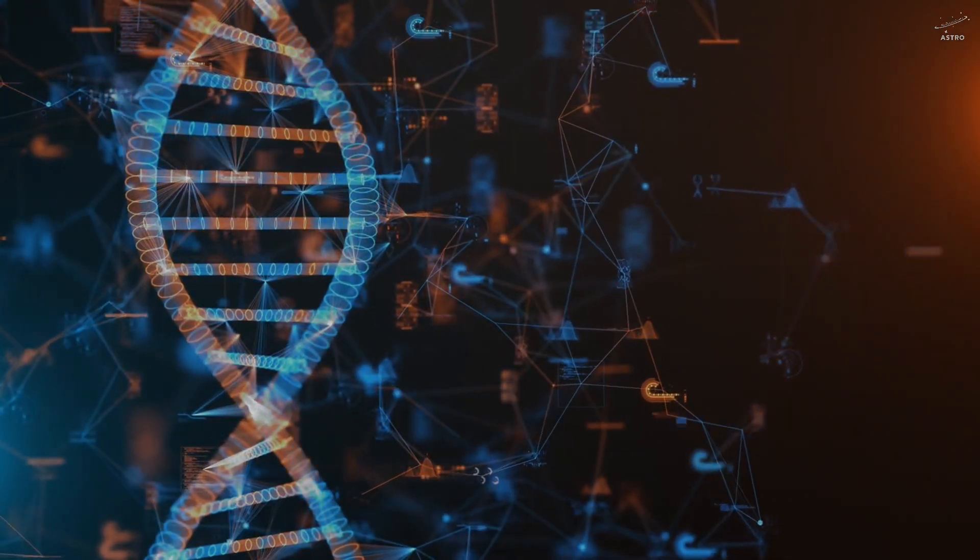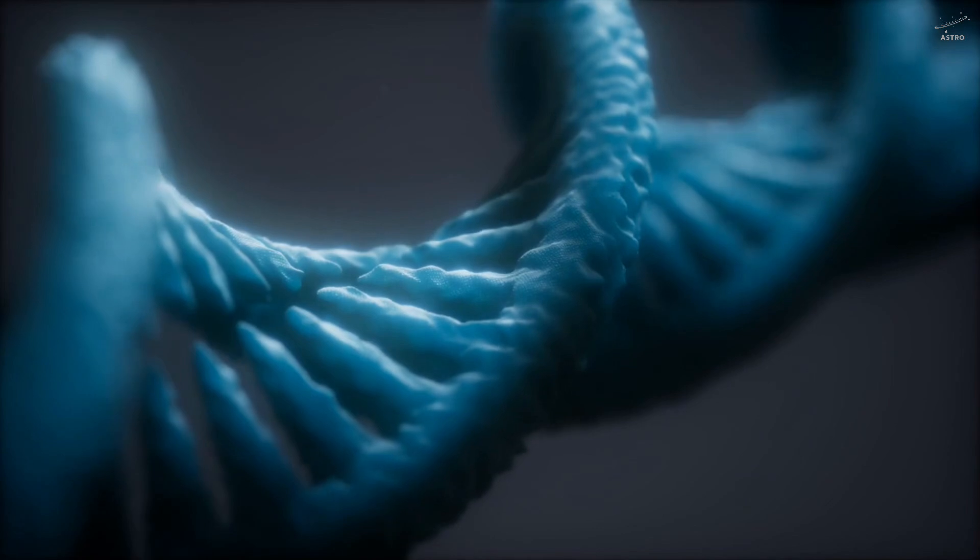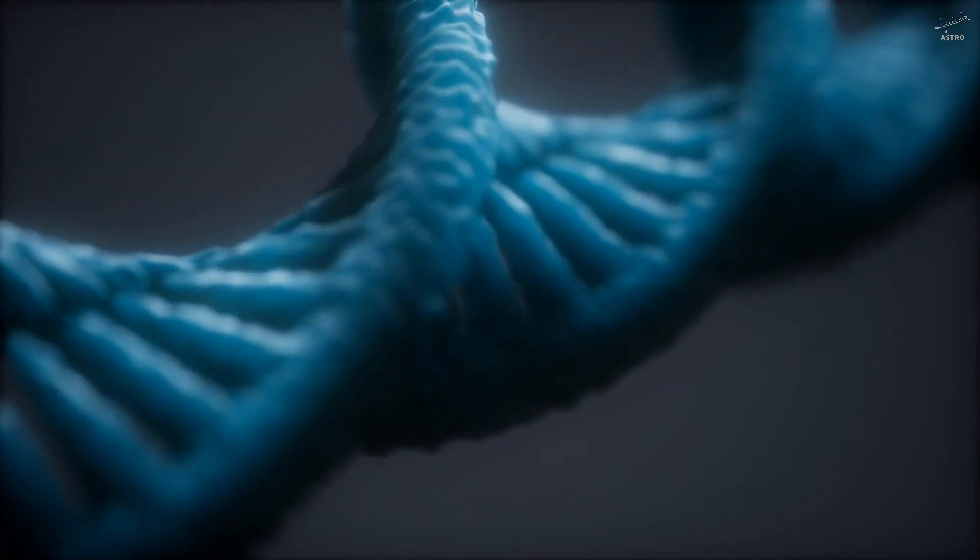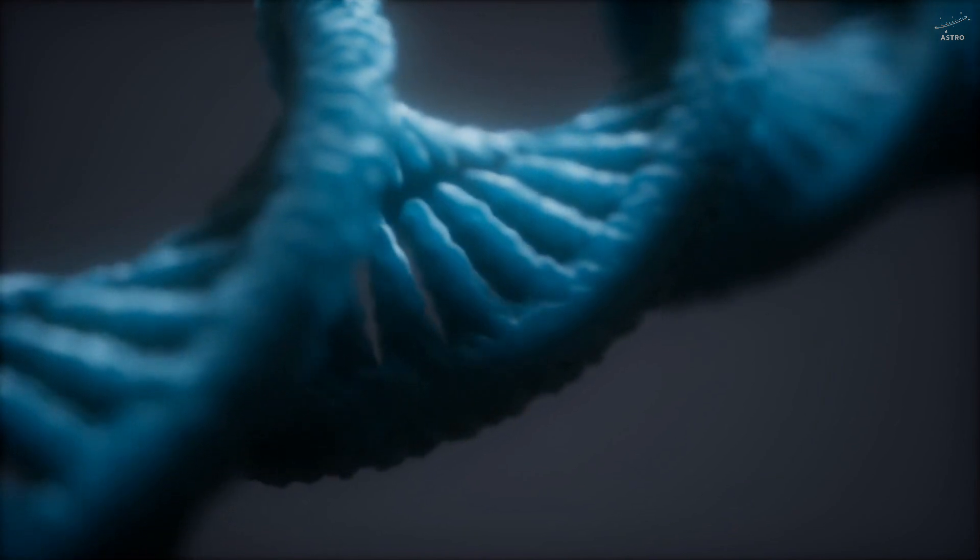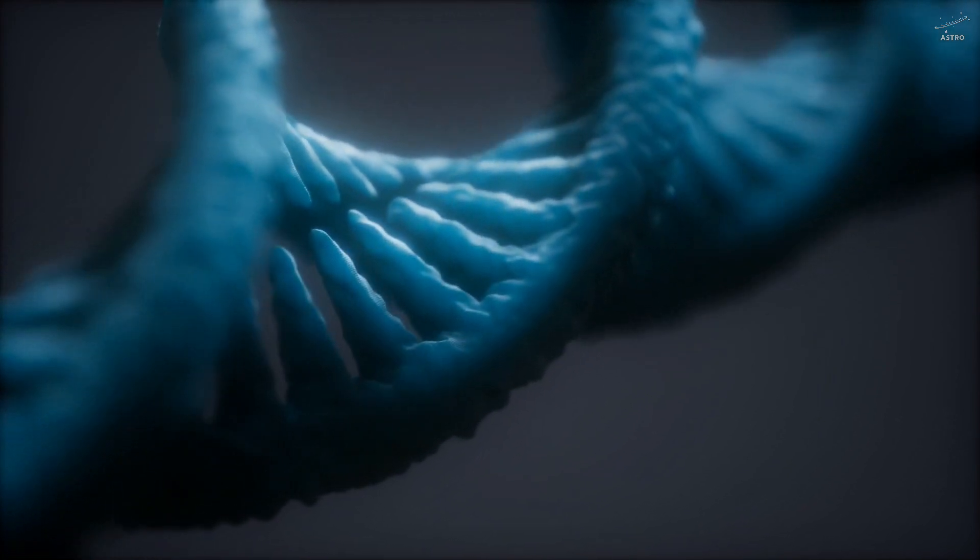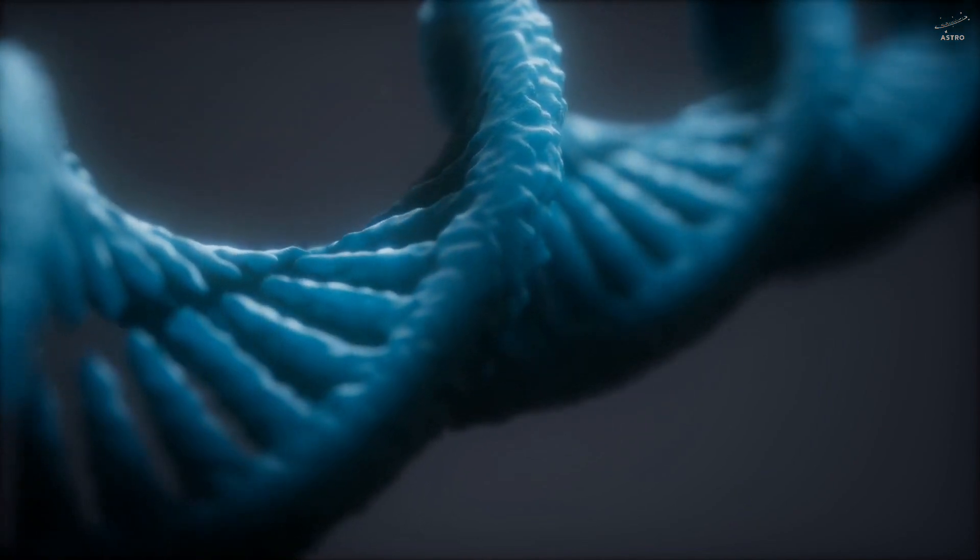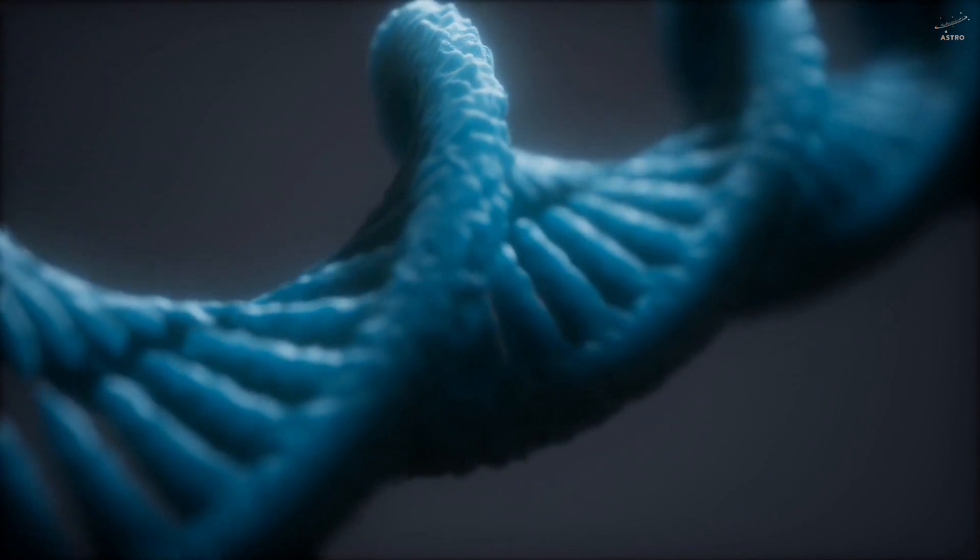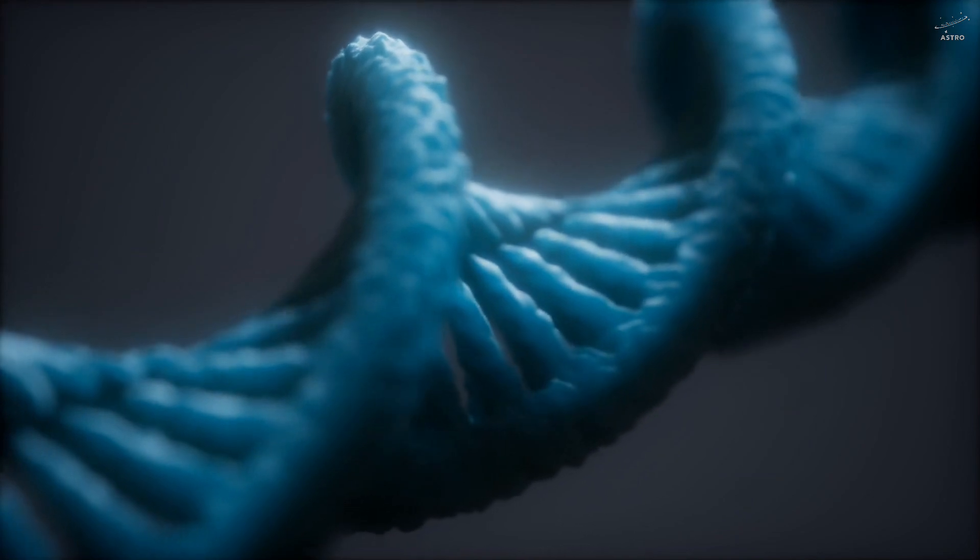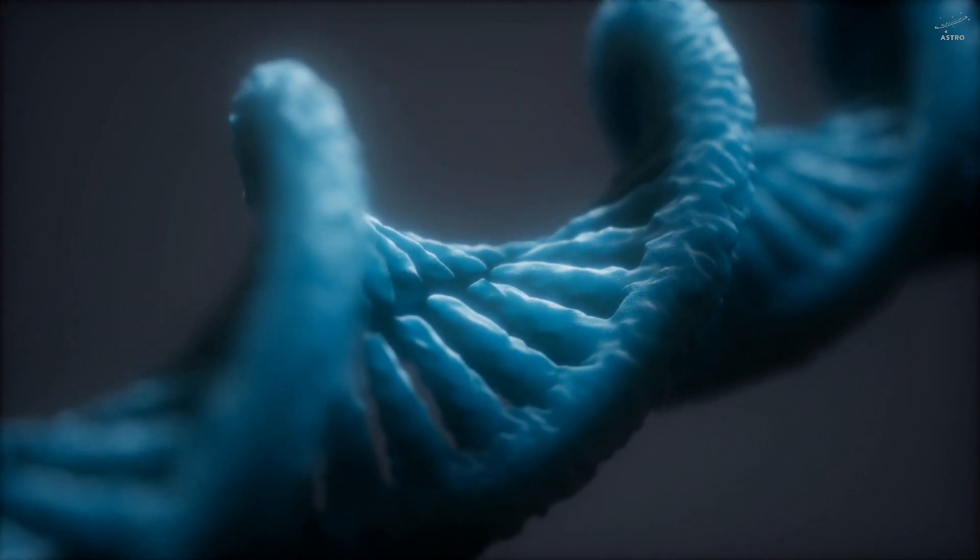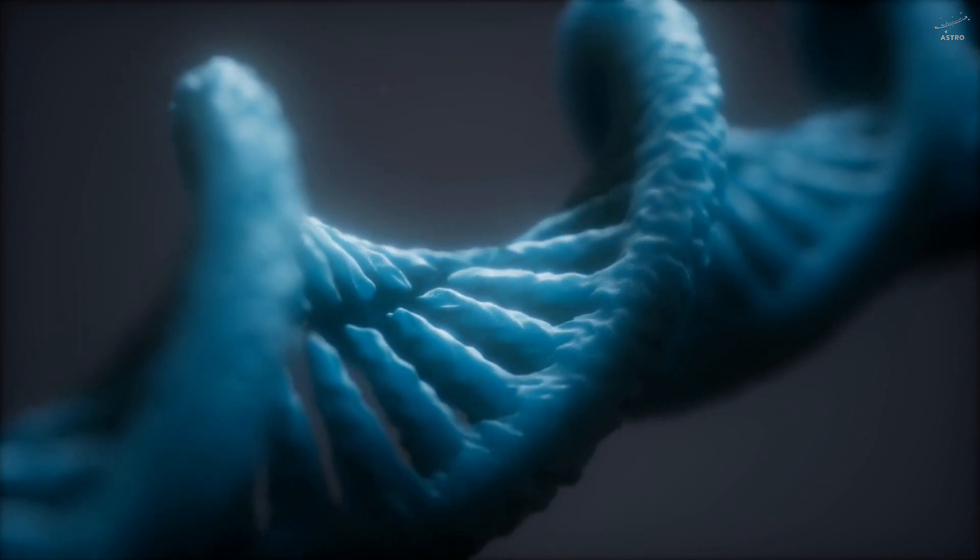Here's what makes it so incredible. DSUP doesn't repair damage after it happens. It stops the damage before it begins. Normally, radiation rips right through DNA, tearing into the double helix. But in tardigrades, DSUP acts like a shield. It absorbs the impact or deflects it, like a force field wrapped around their genes.